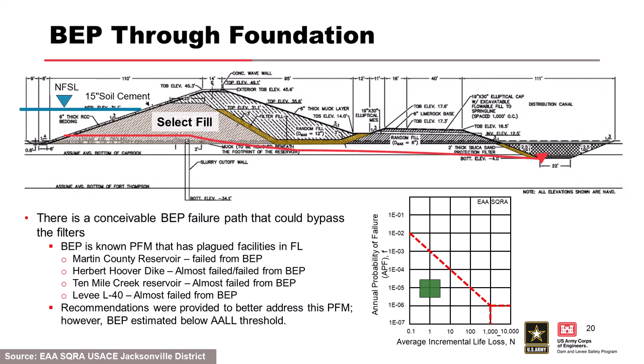The preliminary cross section has select fill that looks like a core — but in south Florida there's no large clay borrow source, only sand and processed limestone. The processed limestone cements up with rock flour, giving fairly low permeability. The design includes a cutoff wall to address solution-prone limestones underneath, a downstream filter, and a distribution canal around the outside with an inverted filter. A conceivable failure path can bypass all these filters. Backward erosion piping probability was estimated at around 10⁻⁵.